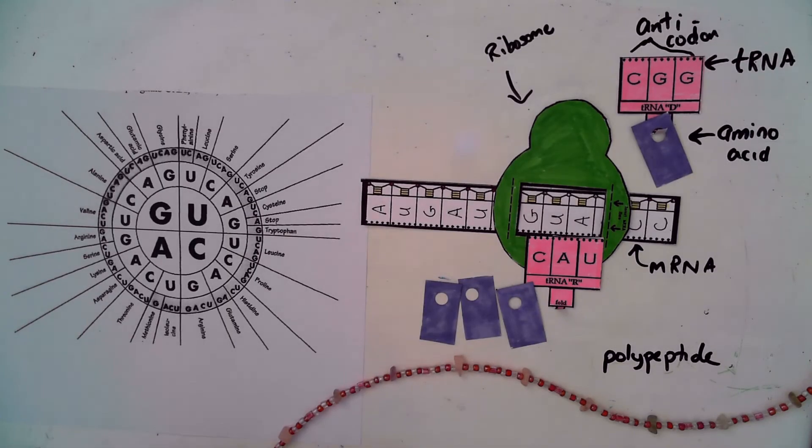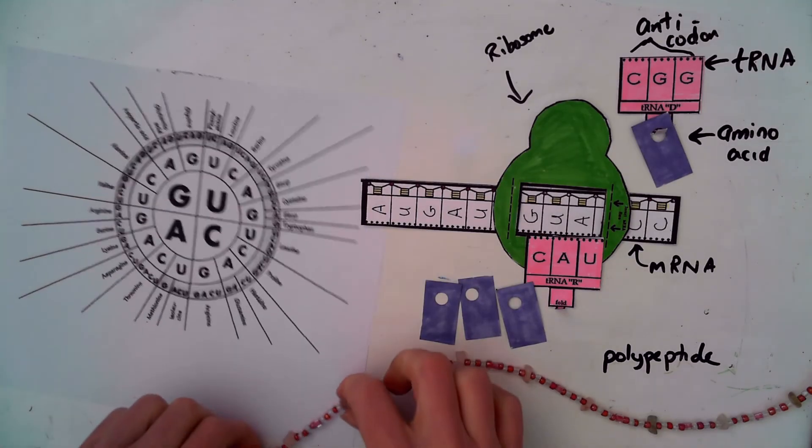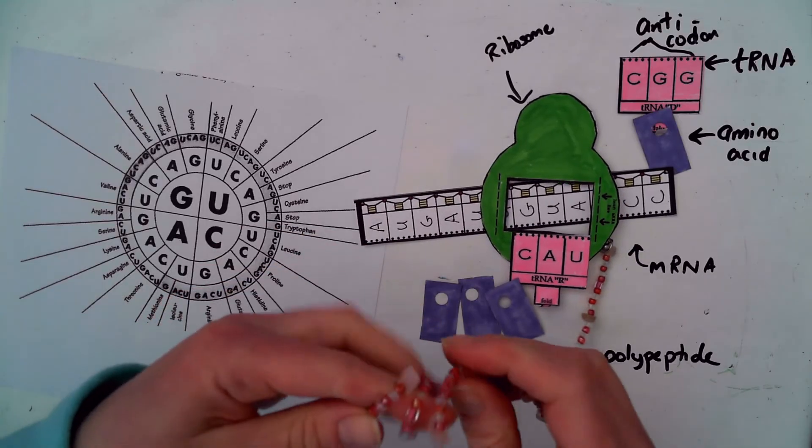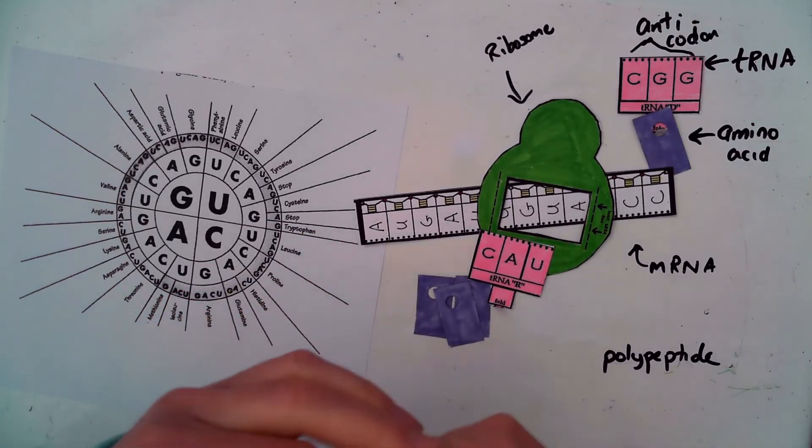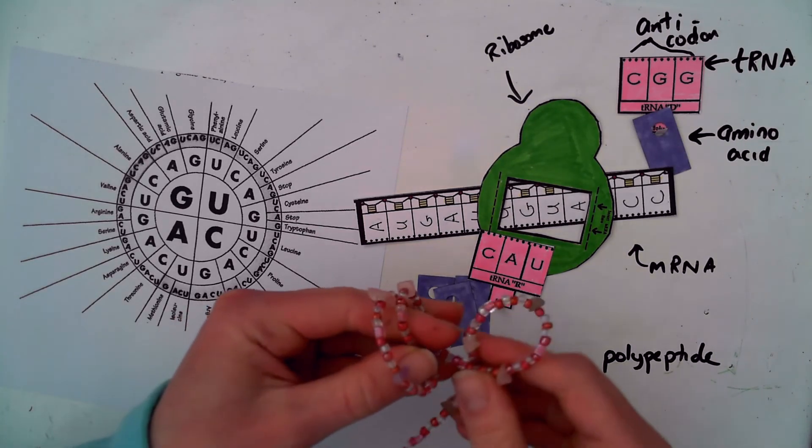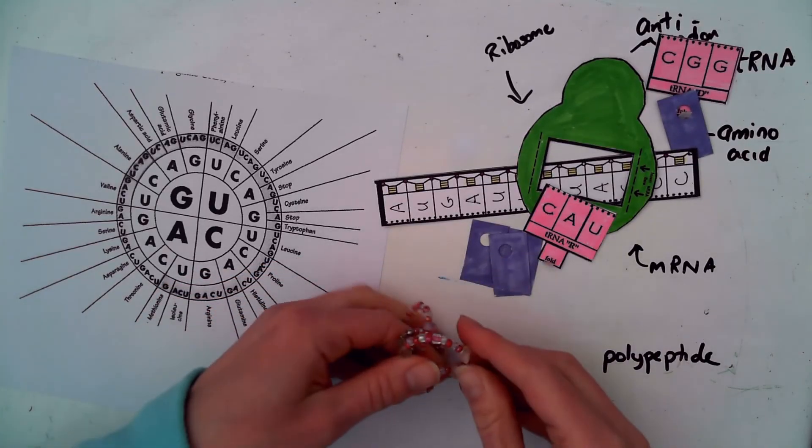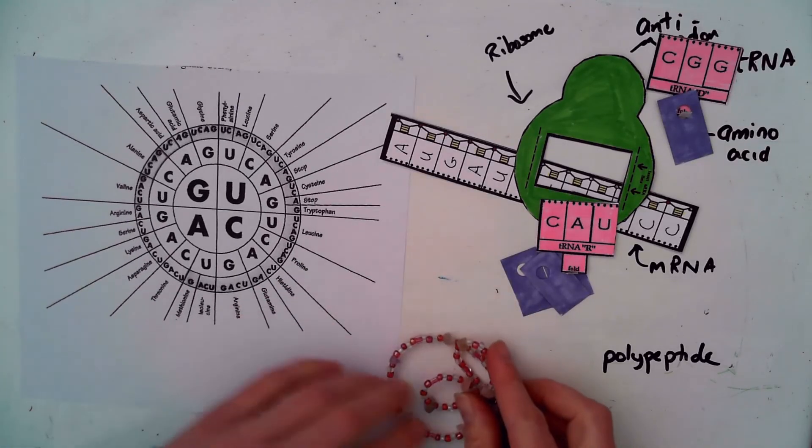It's not called a protein until this twists. So it's going to have to twist up. And it has to do with the charges and the chemistry of the amino acids, how it's going to twist. And then it's also going to fold back up on itself. And it's going to come out with this kind of complex folded twisted structure.